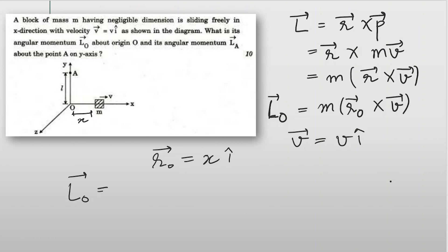We just have to do the cross multiplication, so this is x i cap cross v i cap. Both the position vector and the velocity vector are in the same direction, so the cross product will be zero. So the angular momentum about the origin will be zero in this case.